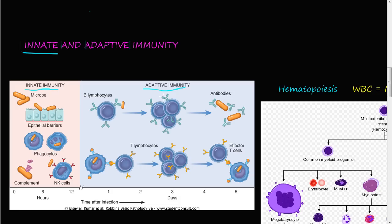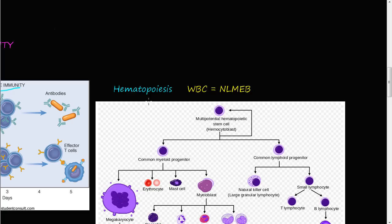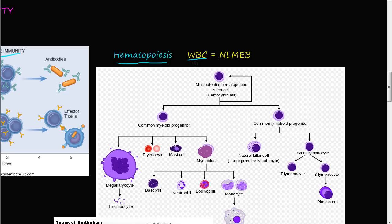Before we go further, I want to remind us of hematopoiesis, which we talked about in previous videos. Hematopoiesis is the blood cell tree — the genealogy of blood cells and how they come about. We have white blood cells, which are floating around inside our blood and they are part of the immune system, responding to infections and microbes.